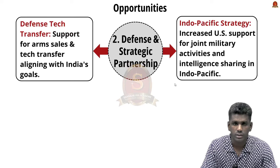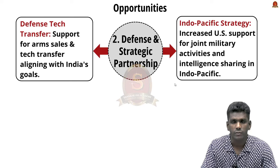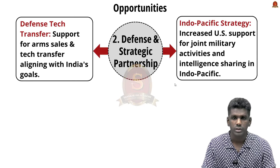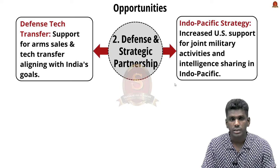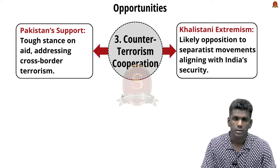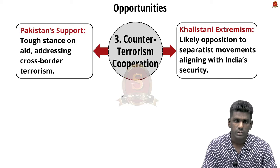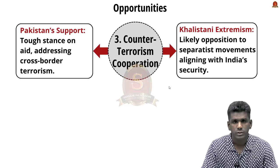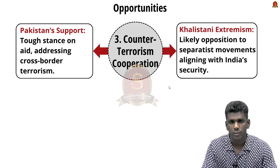Regarding defence and strategic partnership, Trump could support increased arms sales and tech transfer for defence, which aligns with India's defence diversification goals. With Trump's focus on countering China, India may see greater US support for joint military exercises and intelligence-sharing initiatives. Trump may continue a tough stance on aid to Pakistan, addressing India's concerns about cross-border terrorism. Trump's administration could also align with India's security interests by opposing Khalistani separatist movements.